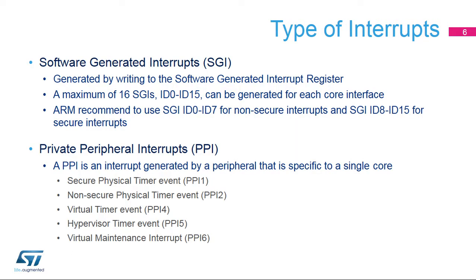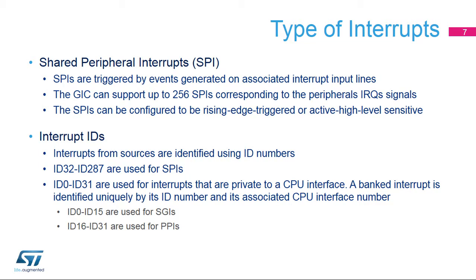Here is a list of the different types of interrupt sources managed by the Global Interrupt Controller. Software-generated interrupts can be used to send an interrupt to the other core, and private peripheral interrupts are mostly from timers. Note that there is one set of private interrupts for each core, which is completely independent from the other core. The shared peripheral interrupts are the usual STM32 MP15 interrupts coming from peripherals, for example, UART. These interrupts are shared between the multiple Cortex-A7 cores and can generate an interrupt to one or both cores.